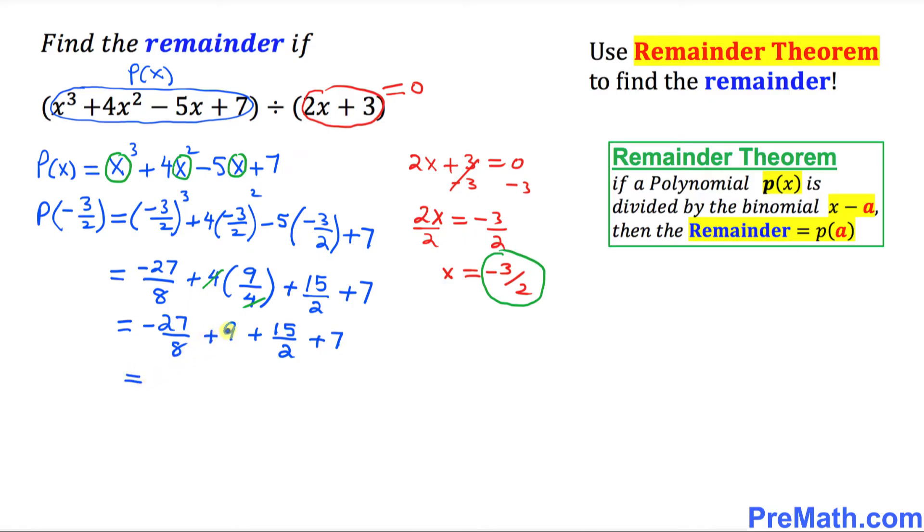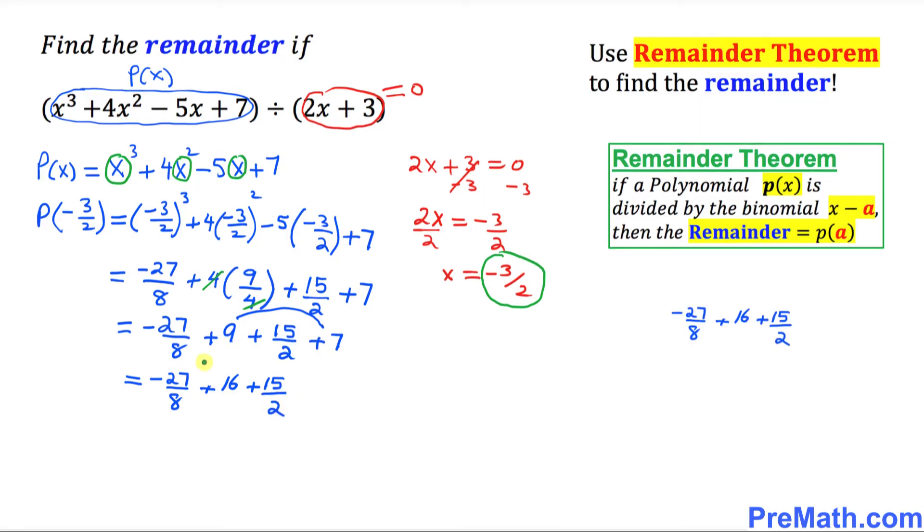Here you can see 9 and 7, you can just add them up. So that's going to be negative 27 over 8. 9 and 7 becomes 16 plus 15 over 2.